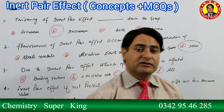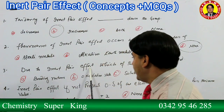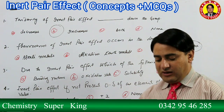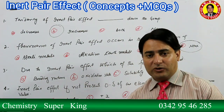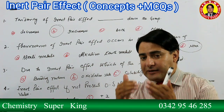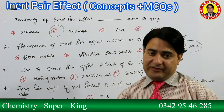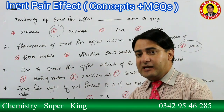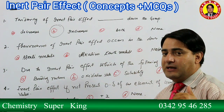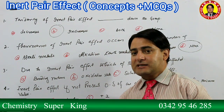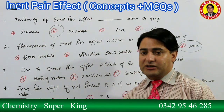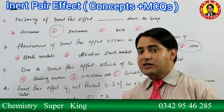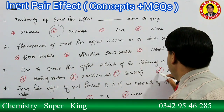The Inert Pair Effect occurs in Groups 3, 4, 5, and 6 - so the answer is 'none of these.' Next MCQ: due to Inert Pair Effect, which of the following is affected - bonding, oxidation state, solubility, or all of these? When Inert Pair Effect does not occur, covalent bonding forms; when it does occur, ionic character increases. Oxidation state decreases by 2 units. Regarding solubility: Lead tetrachloride (PbCl4, +4 state) is not soluble in water, while Lead dichloride (PbCl2, +2 state) is slightly soluble. So the answer is 'all of these.'